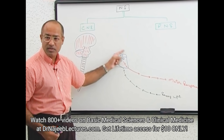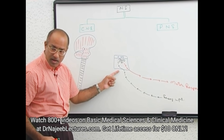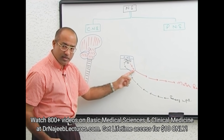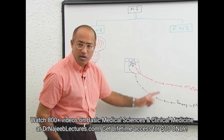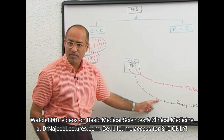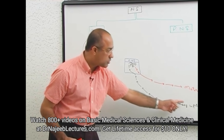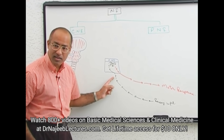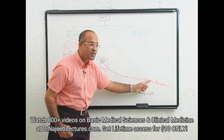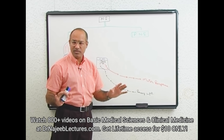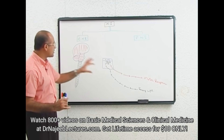The system that receives, integrates, processes information, makes decisions, and sends motor output — this is the central nervous system. All the systems taking information to the CNS, and taking motor information from the CNS to peripheral tissues, together are called the peripheral nervous system.